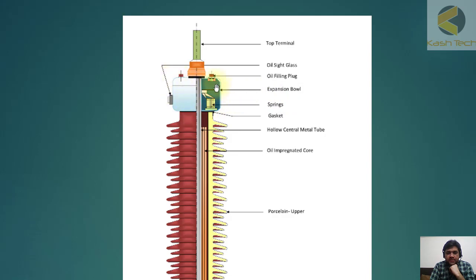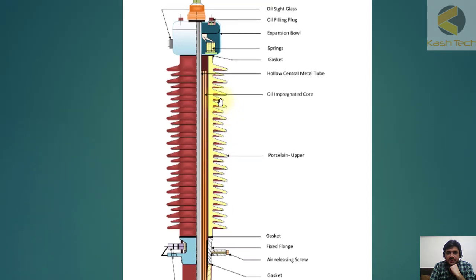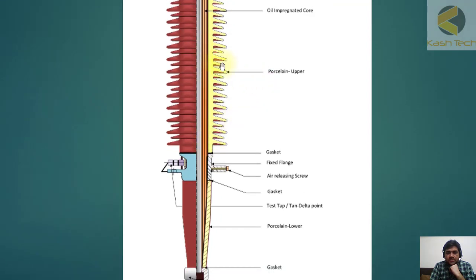Then you can see the spring, the gasket, hollow central metal tube. This is the hollow central metal tube. This is the upper porcelain.